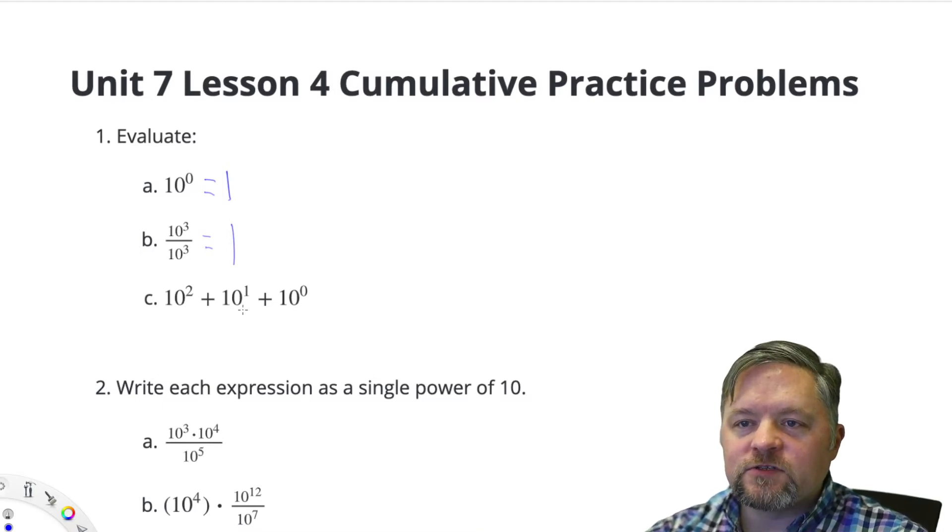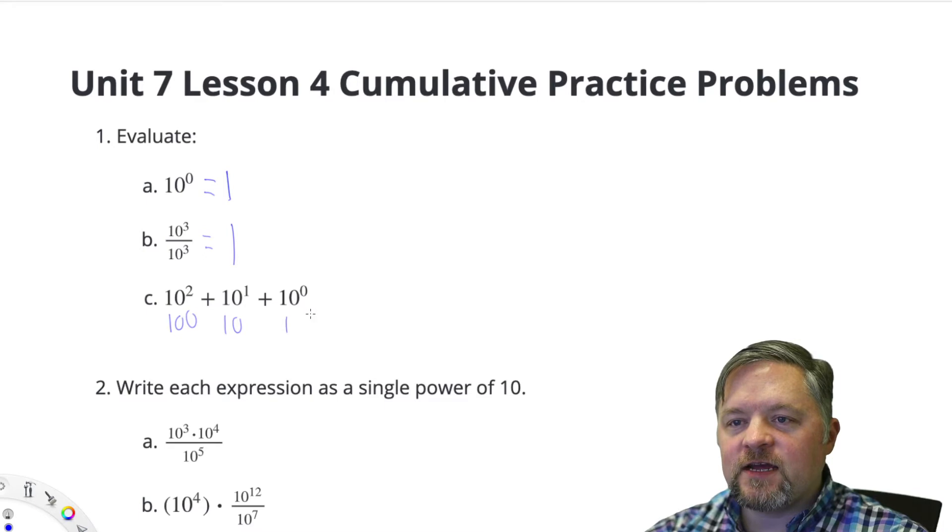This one's a little trickier. 10 squared - 10 times 10 is 100. 10 to the 1 is 10. 10 to the 0 - anything to the 0 is 1. Let's add those together. 100 plus 10 plus 1 equals 111.